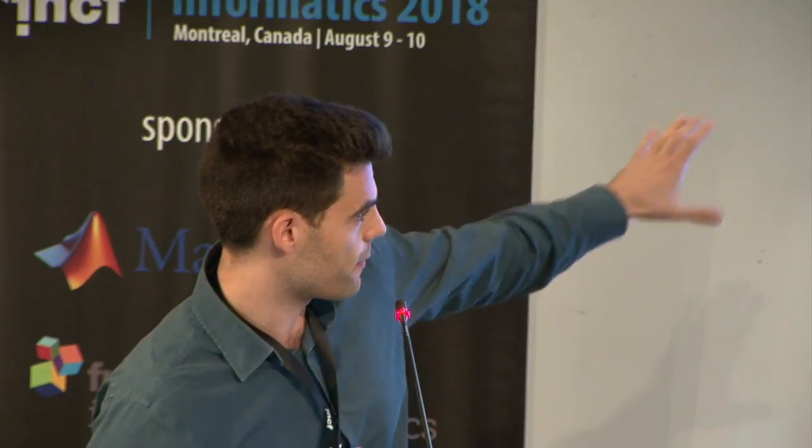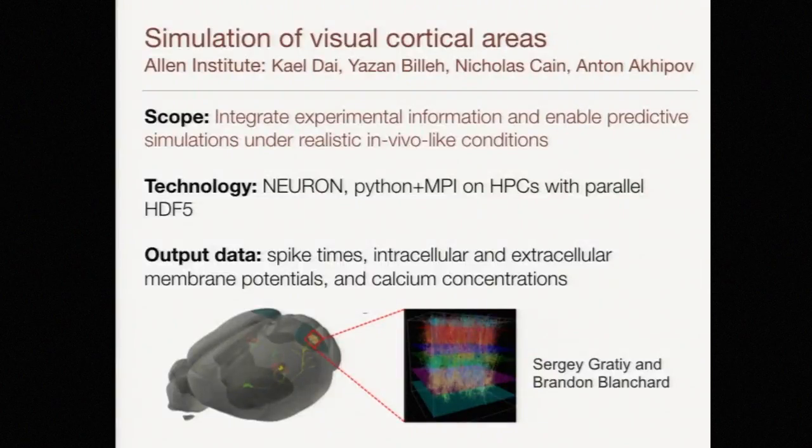I'm going to do an equally brief job of explaining the Allen Institute simulation effort of trying to simulate in vivo-like conditions for understanding visual scenes. The two groups started this effort apart from each other, but settled on very similar technology — both using Neuron, Python, MPI, and high-performance computers with parallel HDF5. The output data is essentially the same for both labs. So we discovered this about each other and decided to team up and try to establish an output format so that the tools we build are compatible with each other.